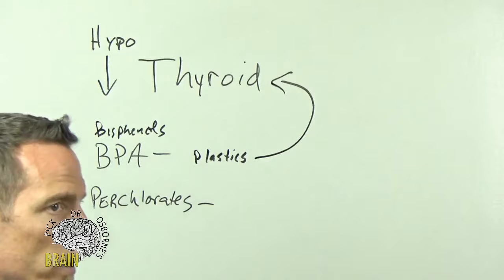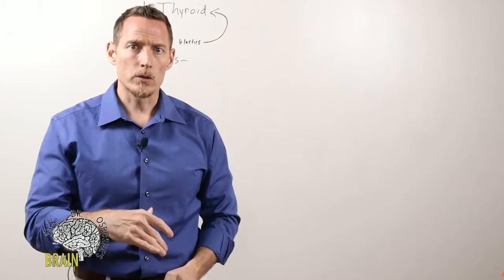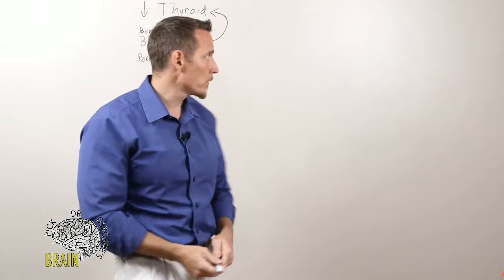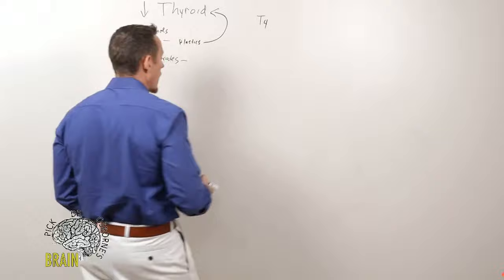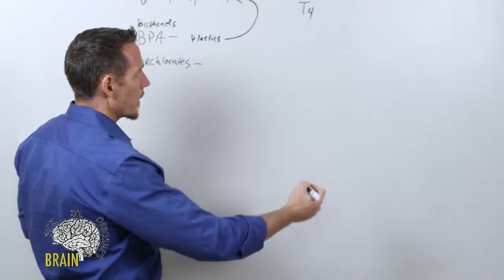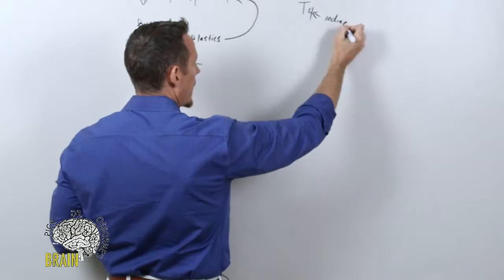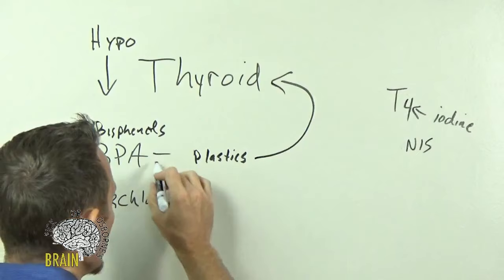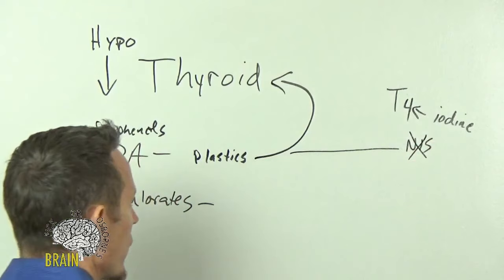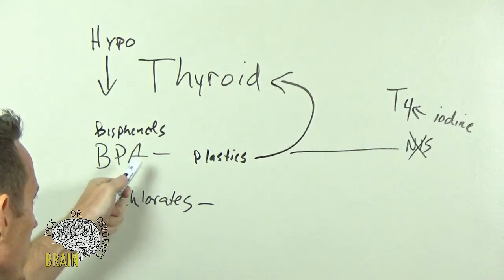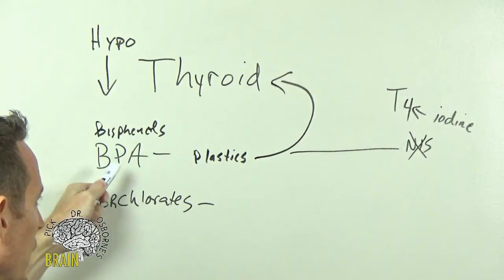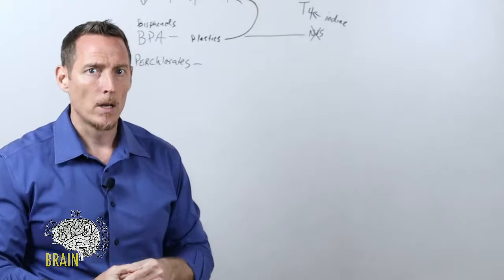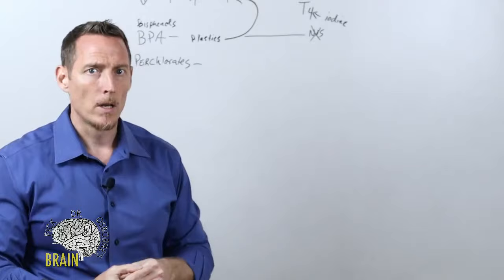Even if it's a BPA-free water bottle, if you're drinking out of plastics on a regular basis, know that can disrupt your thyroid. BPA and bisphenol chemicals can disrupt the way iodine is taken up into your thyroid. The 'four' in T4 represents iodine, and iodine is transported into your thyroid gland through something called an NIS transporter. BPA makes it harder for that iodine to be taken in. You want to use glass or ceramic instead of plastics.